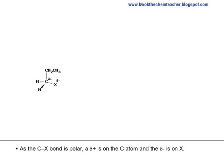As the C-X bond is polar, a delta plus is on the carbon atom and a delta minus is on the X.